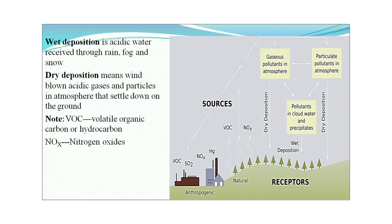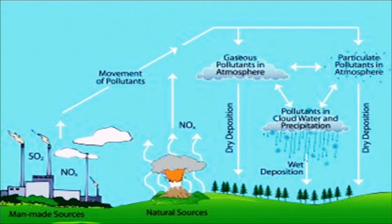Acid rain can occur as wet deposition — acidic water received through rain, fog, and snow — or as dry deposition, where wind-blown acidic gases and particles settle down on the ground. VOC refers to volatile organic compounds or hydrocarbons, and NOx represents nitrogen oxides. Sources include sulfur dioxide and nitrogen oxides produced from man-made sources like industries and factories, as well as natural sources like volcanic eruptions. Both release NO₂ and SO₂ into the atmosphere.